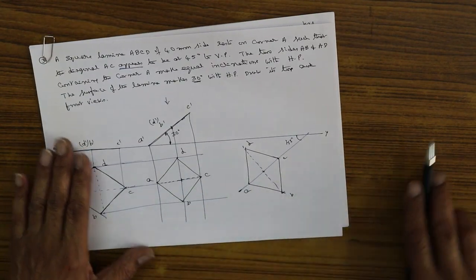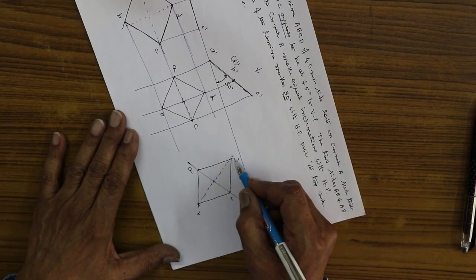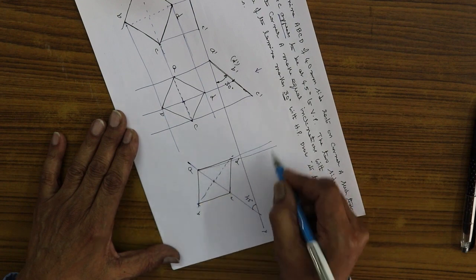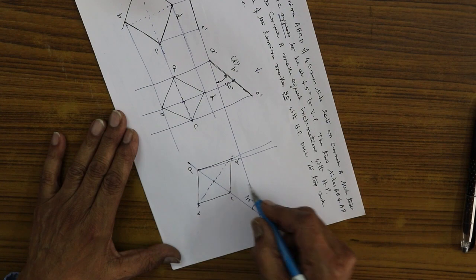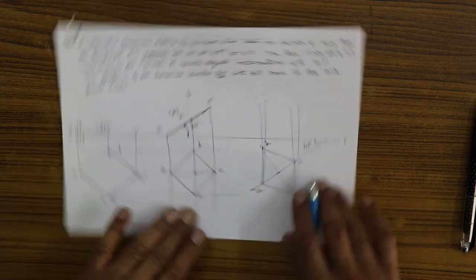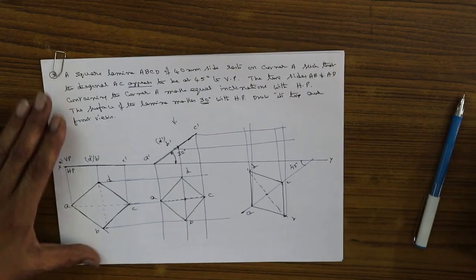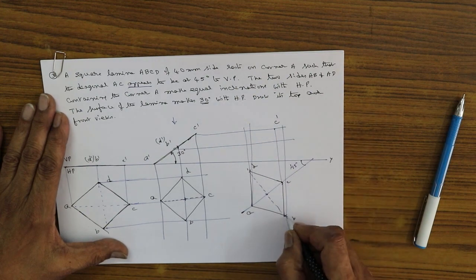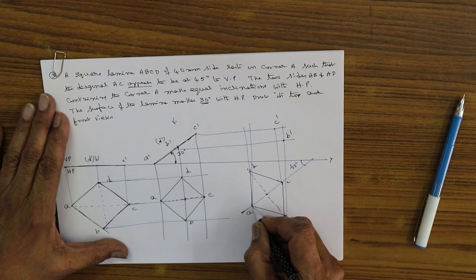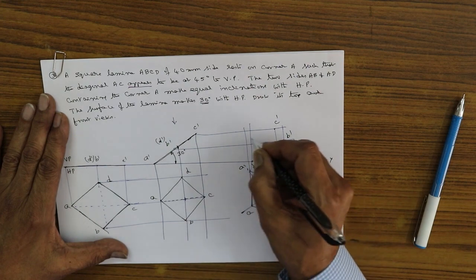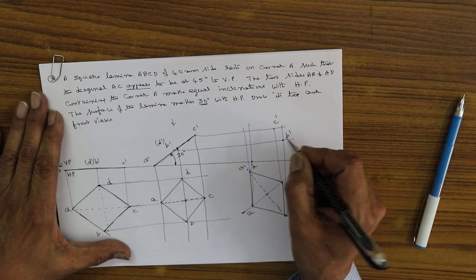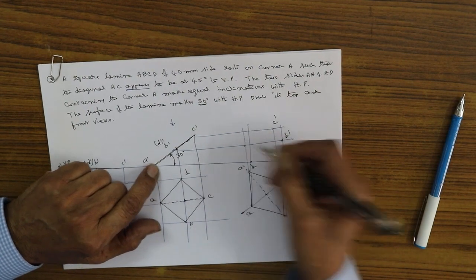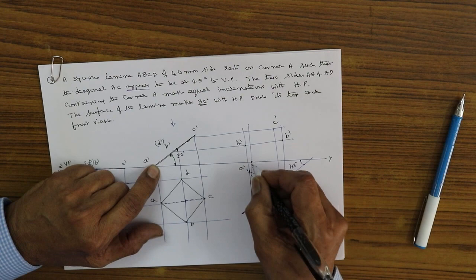This is AC at an angle of 45 degrees. Project and draw the final figure. We have here D, A, C, B with their corresponding dash points — C dash, B dash, A dash, D. Join them in order: A, B, C, D. This is A dash — that is the final answer.